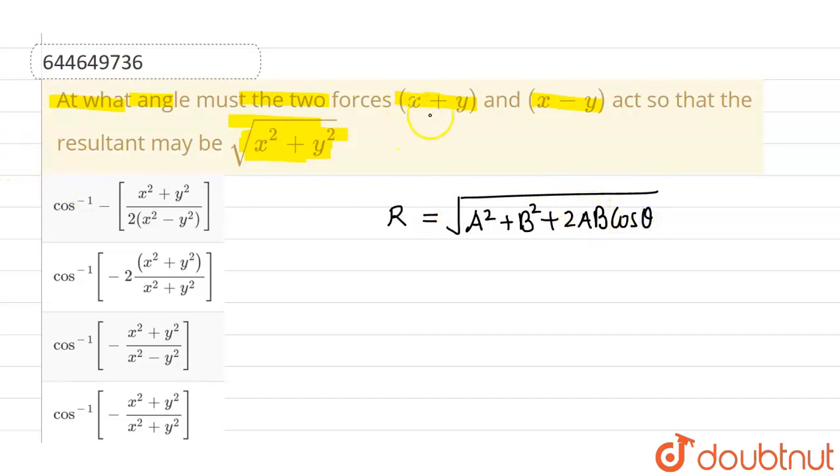Now in this case, the magnitudes are (x+y) and (x-y). Let's say this is A, this is B, and this one is the resultant. So this is R.